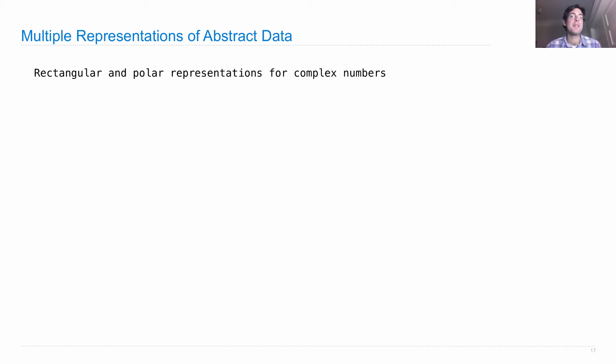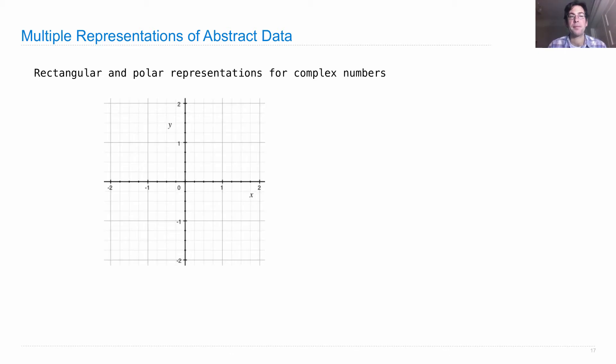Now there's two representations for these numbers. The rectangular representation of a complex number gives you the real part and the imaginary part, so 1 plus 1i.